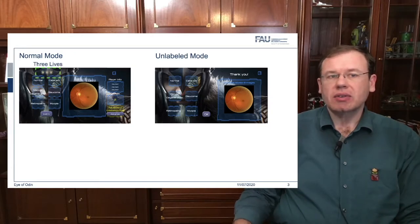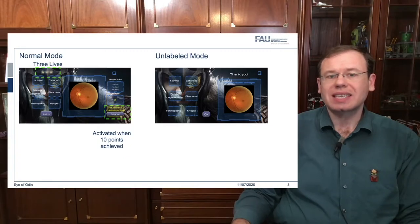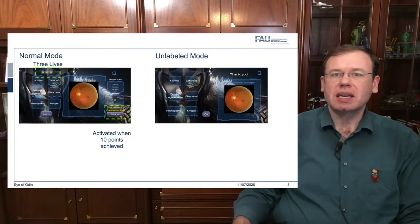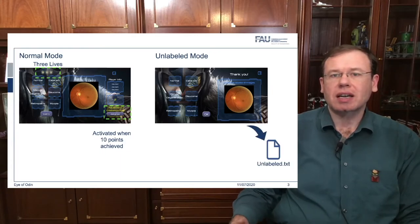So in normal mode you have three lives. You can then advance to the unlabeled mode as soon as you completed 10 points. So we try to calibrate that our labelers are already familiar with the kind of images that are shown and only then you can go to unlabeled mode and generate new labels.